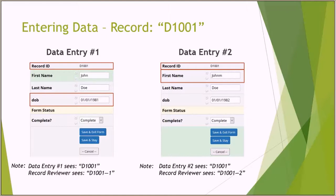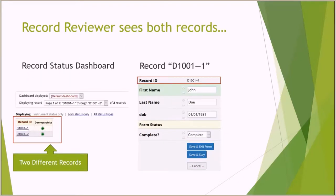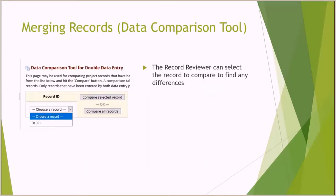I've introduced two errors so you can view them. The first name for data entry number two has an extra M on there, and the date of birth for the first data entry clerk is off by one digit. The record reviewer will be able to go through and check for differences. There's a data comparison tool inside REDCap where the record reviewer can select the record and REDCap will automatically compare it to see if there are any differences between the two.